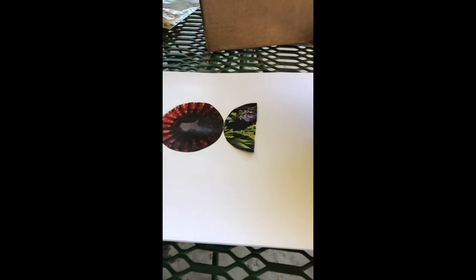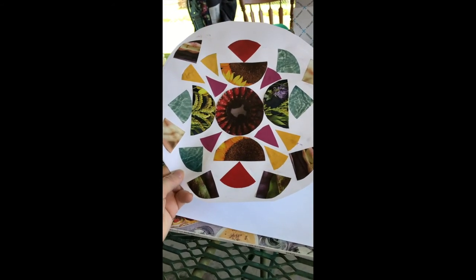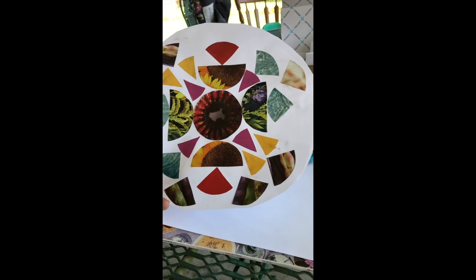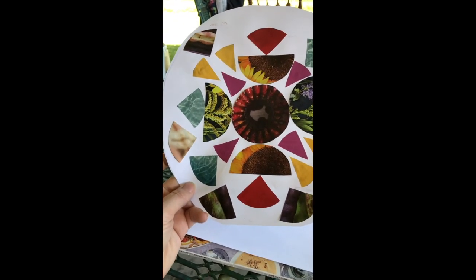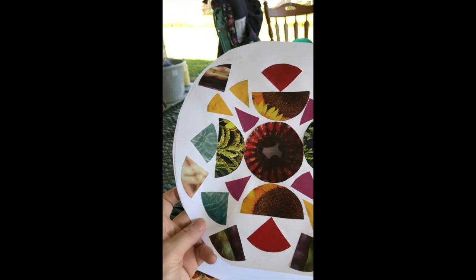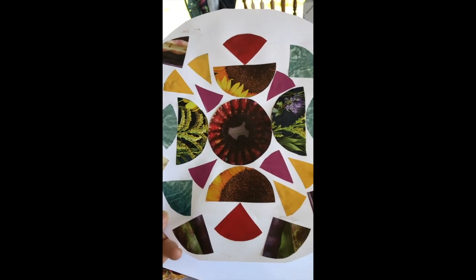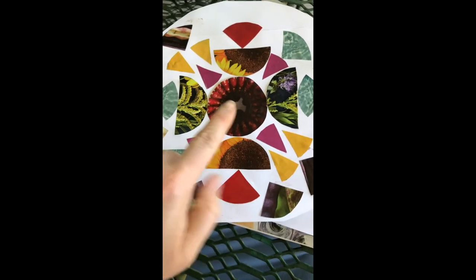All right, so this is my finished product. So I took all the pieces of the circles that I cut up and I glued them in an arrangement in a radial form. Radial means from the center out, so in a circle. And what I tried to do is I tried to create balance, so whatever I did on one side I did on the other side.